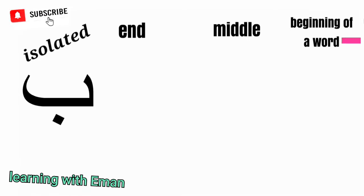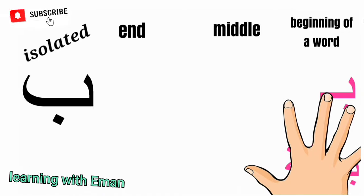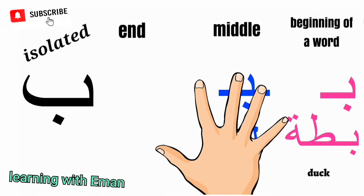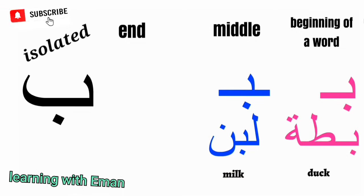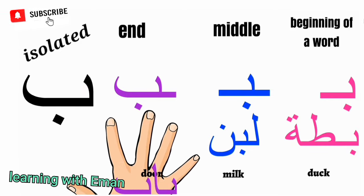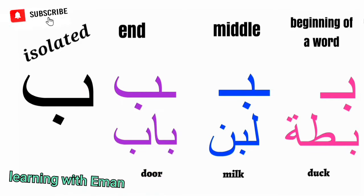At the beginning of a word, Ba means duck. At the middle of a word, it appears in a word meaning milk. At the end of a word, like in a word meaning door.